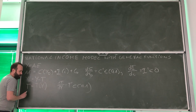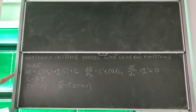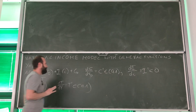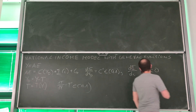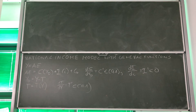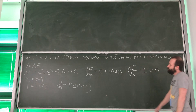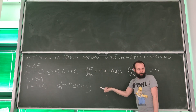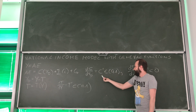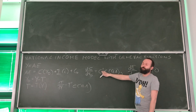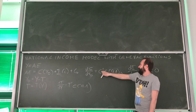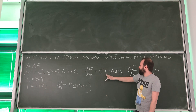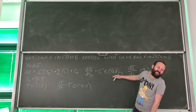Consumption is some function of disposable income — we do not know exactly what it looks like. Investment is some function of the interest rate. Government spending is just government spending. Disposable income is defined as before, as the difference between income and taxation. However, taxation is now just some general function of income. We still have some additional information: the derivative of consumption with respect to disposable income — the marginal propensity to consume, denoted C prime — must be between 0 and 1.